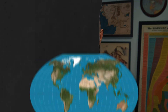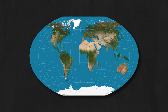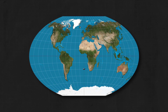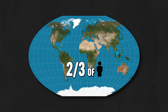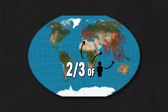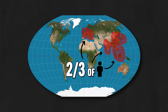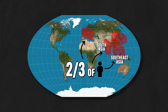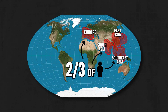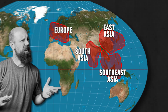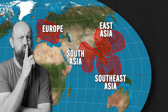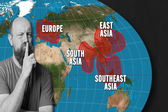And to further blow your mind, if we only look at the ecumene, almost two-thirds of the world's population lives in these four population clusters: South Asia, Southeast Asia, East Asia, and Europe. So the question is, why is the Earth's population distributed in this way and not some other way?